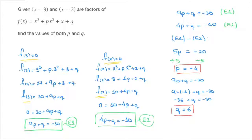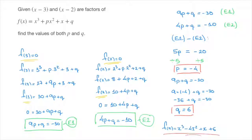To complete the exercise, I'll rewrite the polynomial function replacing p and q by their respective values: f of x equals x to the power of 3 minus 4x squared plus x plus 6. And that's the final answer. That's how we solve this typical exam-style question in which we're given two factors of a polynomial and asked to find two unknown coefficients.